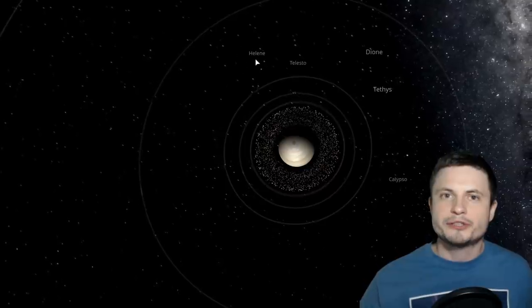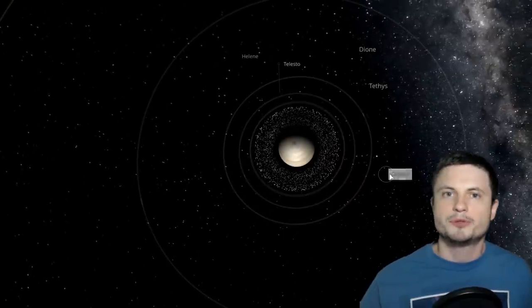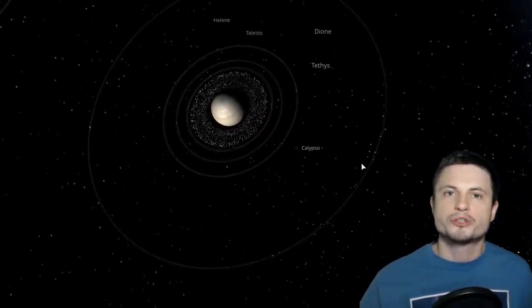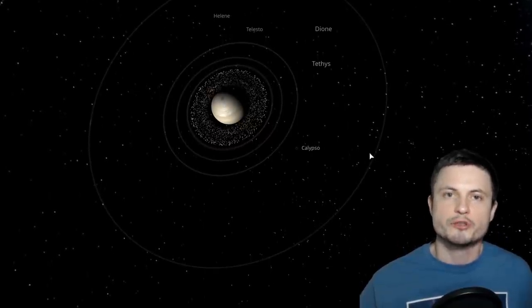And then in 1980 we started discovering more unusual moons. Here we have Helene, Telesto, and Calypso. All three of which are what's known as Trojan moons. They are also in the Lagrange points. By the way, here's a quick reminder of what Lagrange points are.